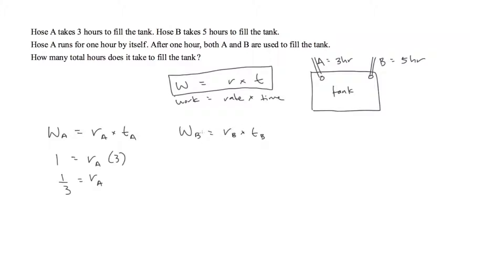We do the same thing for Hose B. The work that it's doing is just 1 unit of work. The rate would be what we need to determine, and in this case it would take 5 hours, so the rate of Hose B is 1 fifth.